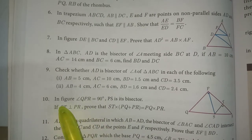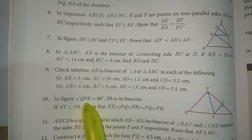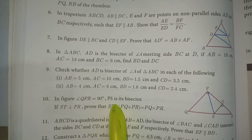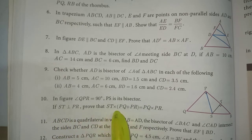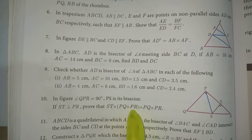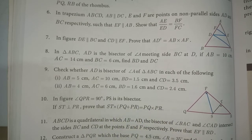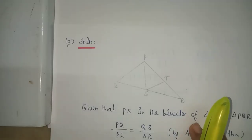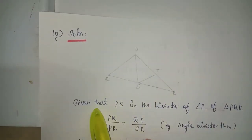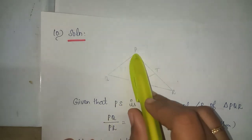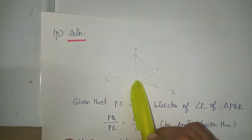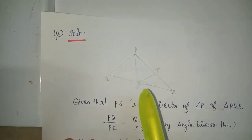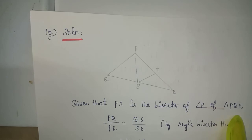Next, problem number 10. In the figure, angle QPR is equal to 90 degrees, PS is its bisector. If ST is perpendicular to PR, then prove that ST into (PQ plus PR) is equal to PQ into PR. Solution: PS is the bisector of angle P in triangle PQR.